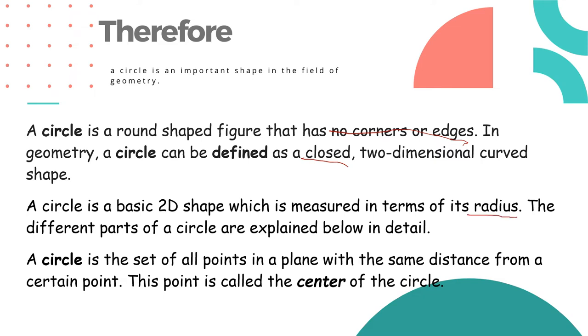We will discuss further the different parts of a circle below in detail. A circle is the set of all points in a plane with the same distance from a certain point. This point is called the center of the circle. So let us find out what are the parts of a circle.